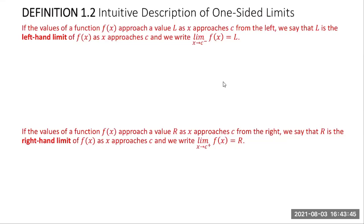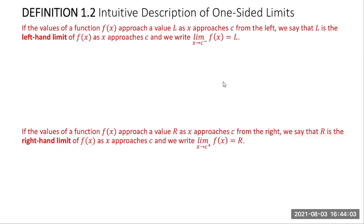Here's the definition of the right-hand limit: if the values of a function f(x) approach value R as x approaches c from the right, we say that R is the right-hand limit of f(x) as x approaches c, and we write this limit statement with a plus sign. To indicate that x approaches c from the right-hand side you put a plus sign; for the left-hand side you use a minus sign.